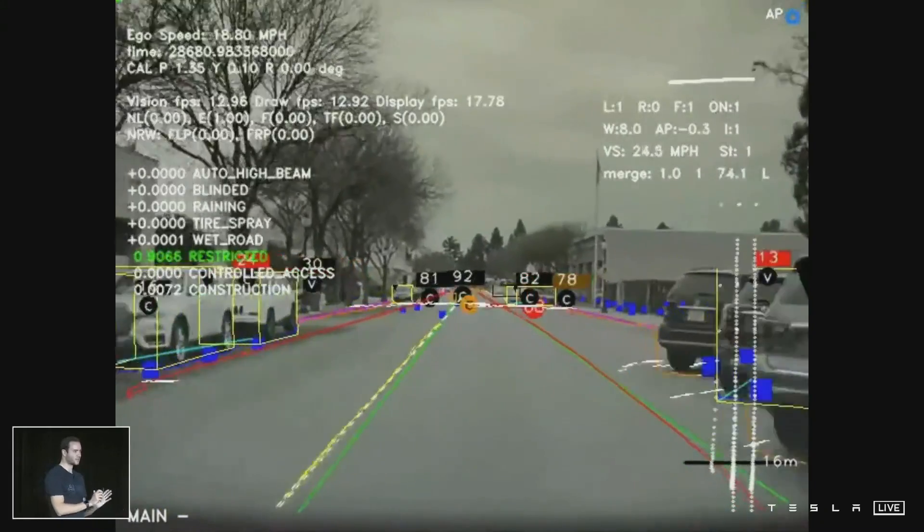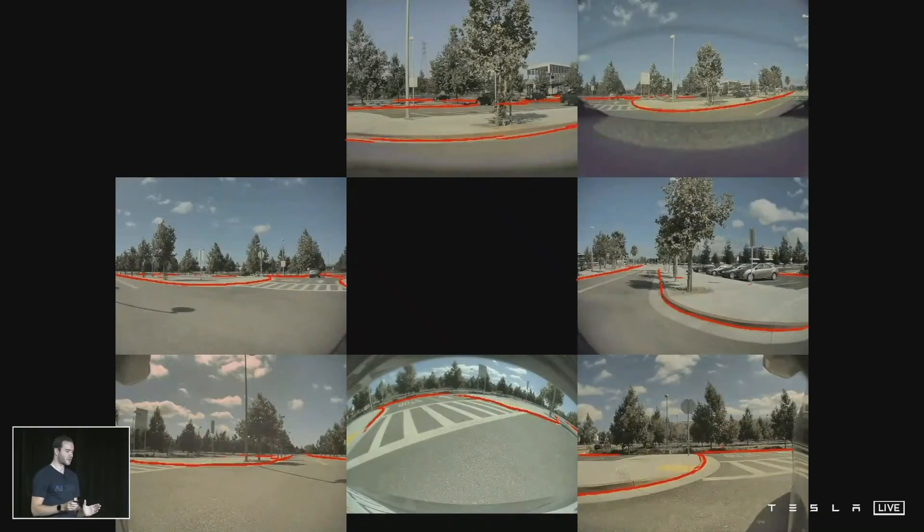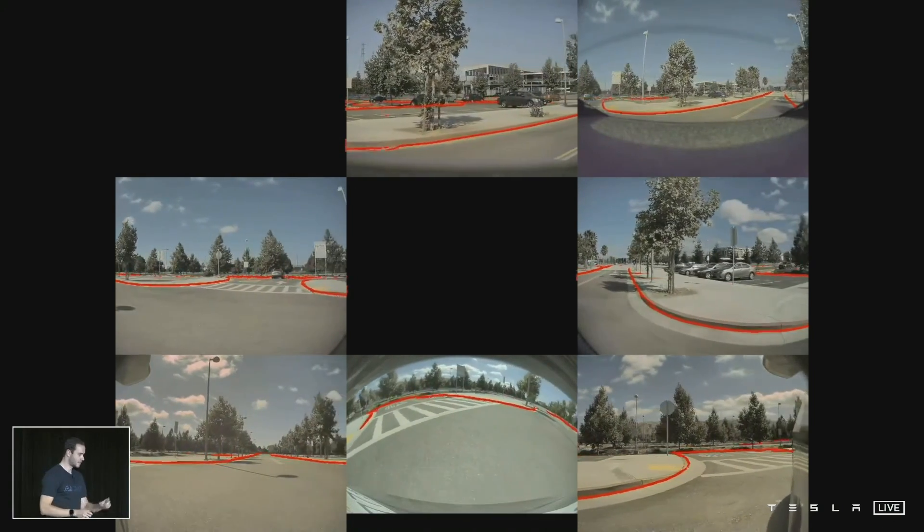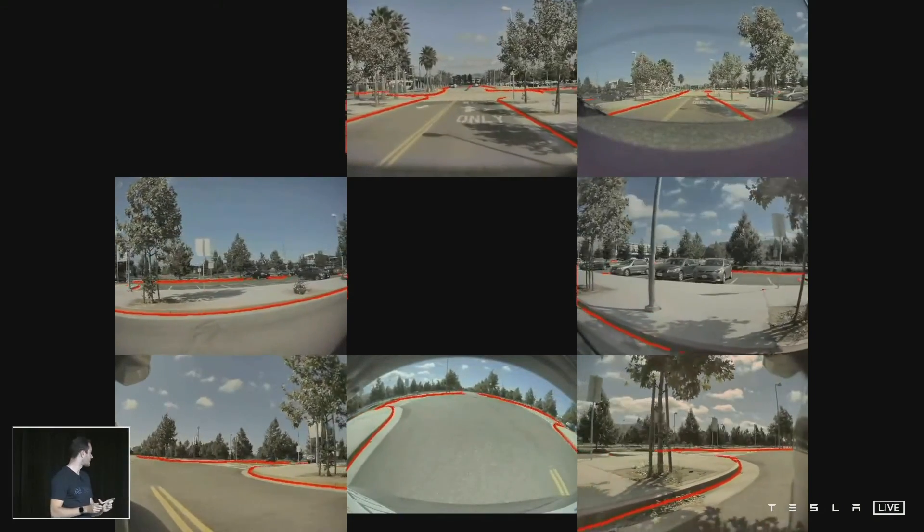That was all fine and great, but as we worked towards FSD we quickly found that this is not enough. Where this first started to break was when we started to work on Smart Summon. Here I am showing some of the predictions of only the curb detection task for every one of the cameras.